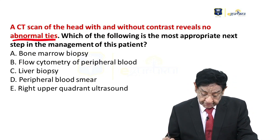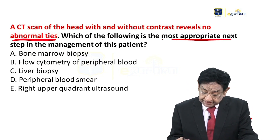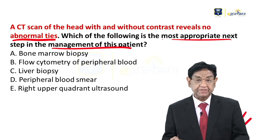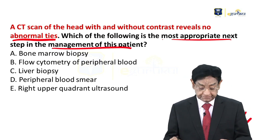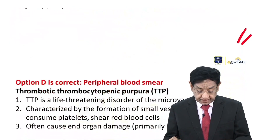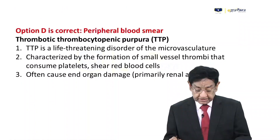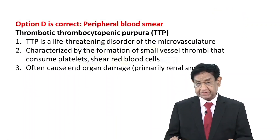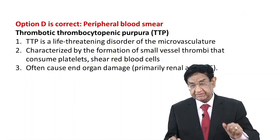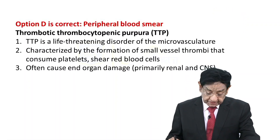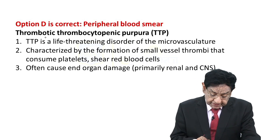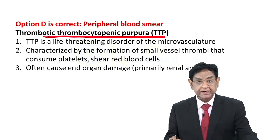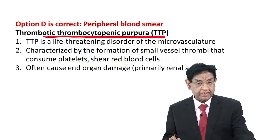The most appropriate next step in the management of this patient is — the answer is to go for a peripheral smear. That is the first investigation to be done. This is a case of thrombotic thrombocytopenic purpura.